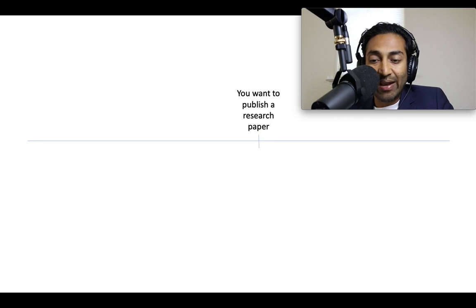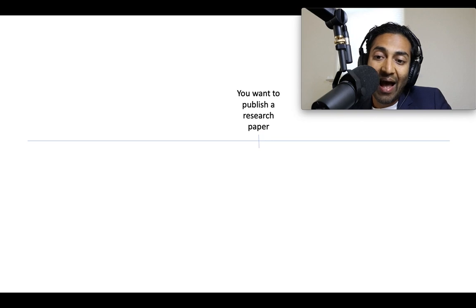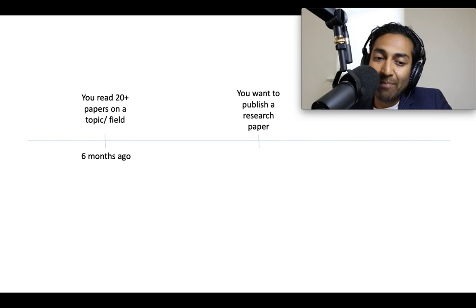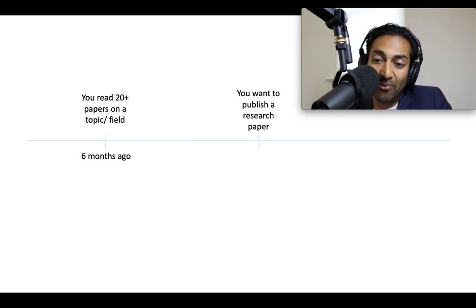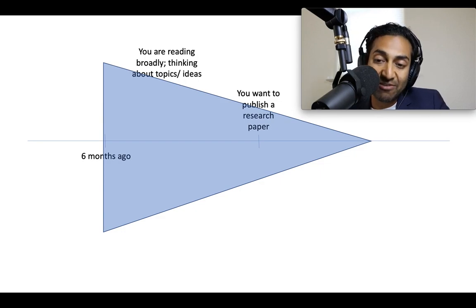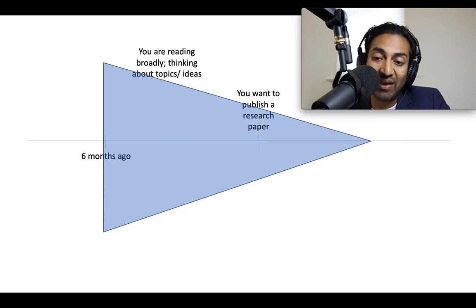Let's say you're a fellow or an independent researcher and you want to publish a research paper. You're already pretty far along in the process, so we've got to back up a little bit. Six months ago, you probably should have been reading many, many papers in the topic or field you wish to contribute to — at least 20 papers in that field. You need to get a sense of what the lay of the land was, what that field looks like. It's actually more complicated than that, because six months ago you need to be reading lots of papers in lots of different fields, because you do not yet know the field in which you want to contribute a research publication.